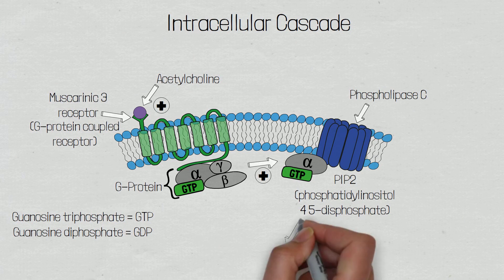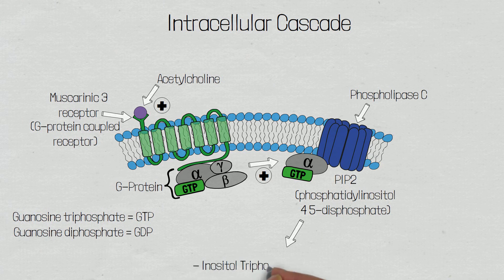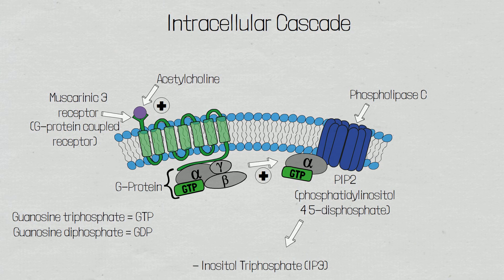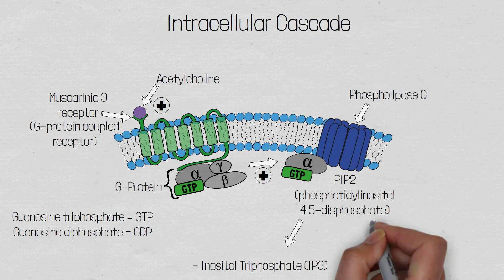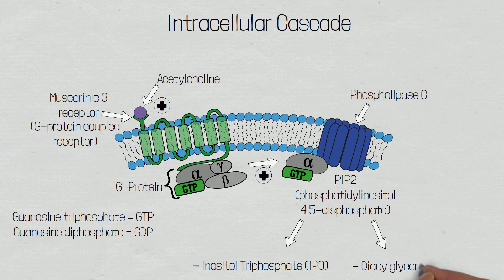These second messengers are inositol triphosphate, also denoted as IP3, and diacylglycerol, denoted as DAG. And these two second messengers are achieved by the cleavage of inositol phospholipids.